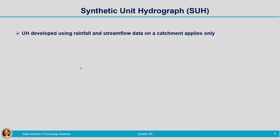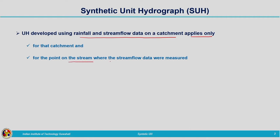Today we are going to look into synthetic unit hydrograph. From the name itself it is clear that it is the unit hydrograph which is artificially constructed. The unit hydrograph developed using rainfall and stream flow data on a catchment applies only to that particular catchment and also for the point on the stream where the stream flow data were measured.